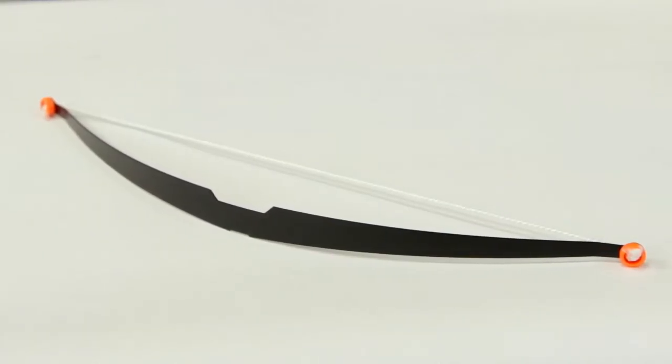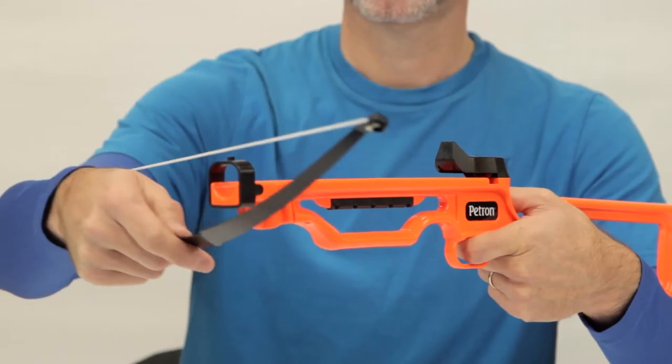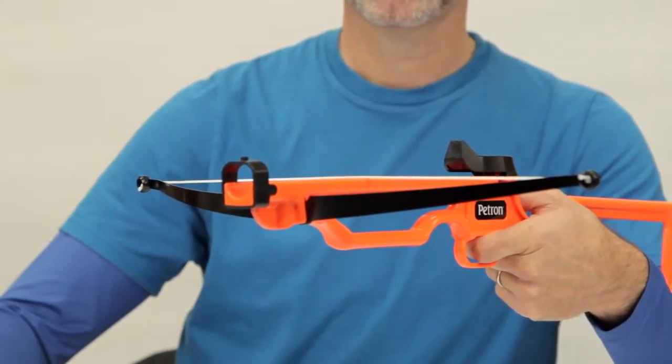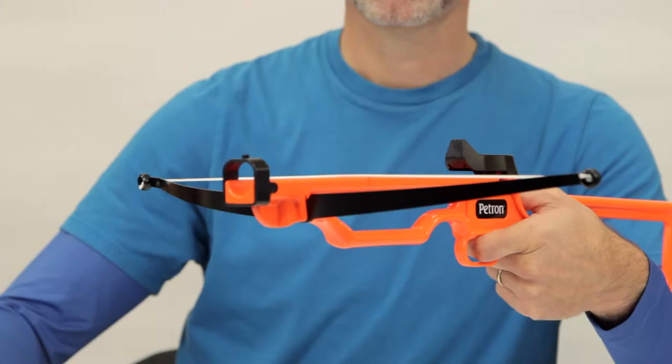The first thing you're going to do is take the prod which is this piece and place it into the bow body. Make sure the string is on top of the bow then insert the prod with the larger cut inserted into the bow body. It should now look like this.